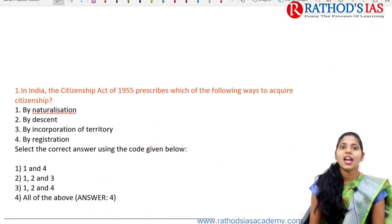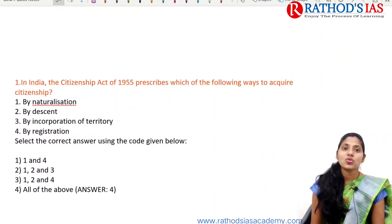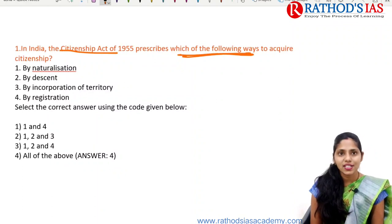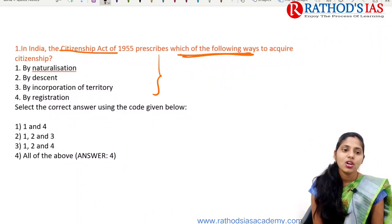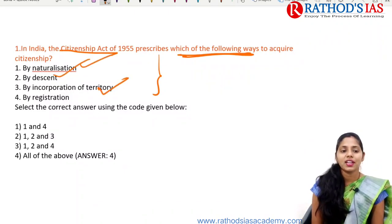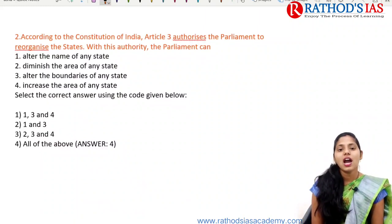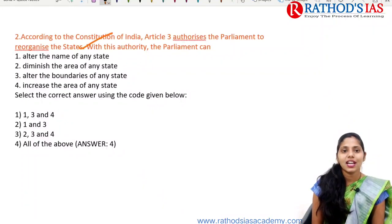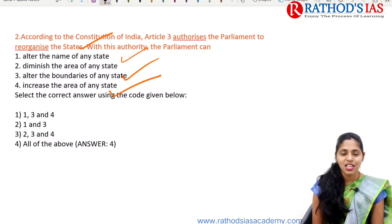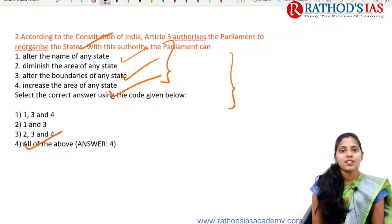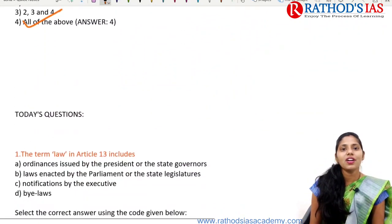Now let us see explanations for yesterday's questions. First, regarding the Citizenship Act of 1955: it prescribes four ways to acquire citizenship — by naturalization, by descent, by incorporation of territory, and by registration. All four are correct, so the correct option is all of the above. Next, regarding Article 3 of the Constitution, which authorizes Parliament to recognize states: Parliament can alter the name, diminish area, alter boundaries, and increase area — all four are correct, so the answer is all of the above. Many students gave the correct answers.